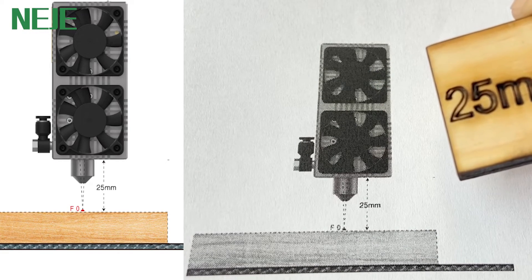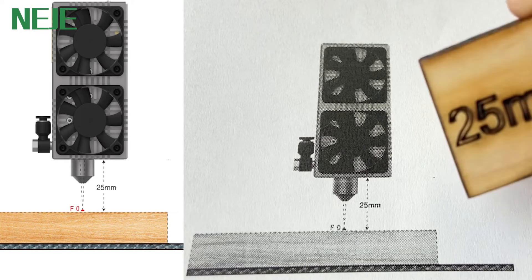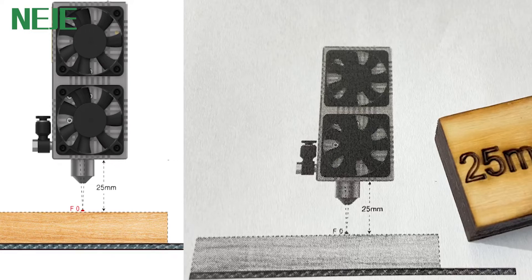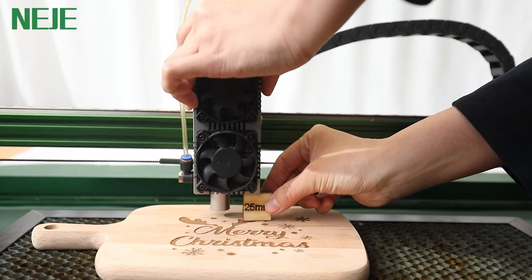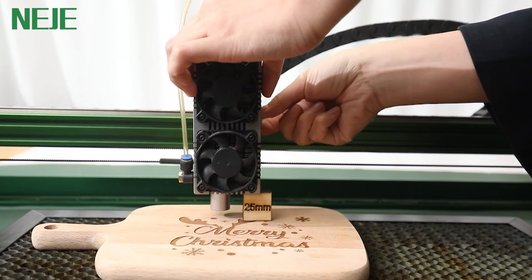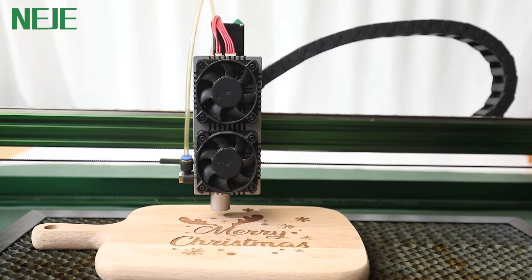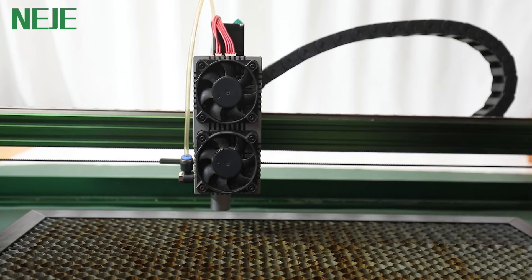just unscrew the screw of the module, and then put this block under the module. Then you fix the screws and you're ready to go. This method actually doesn't use the motorized Z-axis, so it's suggested for beginners.